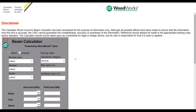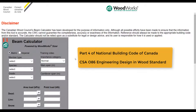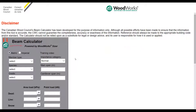Welcome to the training video of the Canadian Beam Calculator. In this video, I'm going to demonstrate how to use this tool to design a beam and introduce a few structural design concepts. The Beam Calculator is a simple design tool based on Part 4 of the National Building Code and the CSA O86 Engineering Design in Wood Standard. It is supported and powered by the WoodWorks Sizer software, which I will briefly talk about at the end of this video.